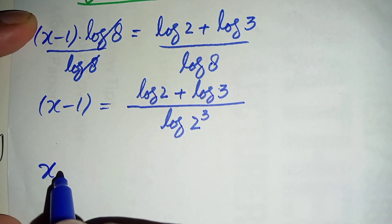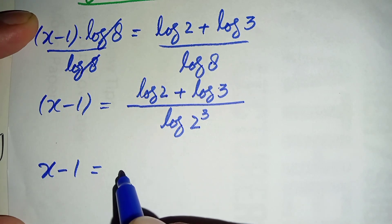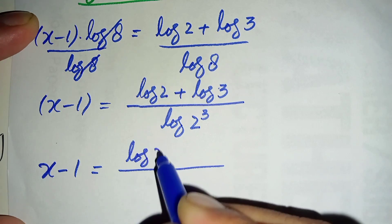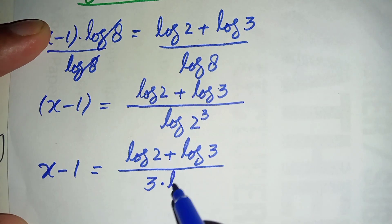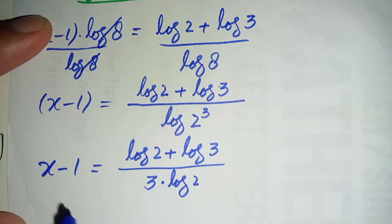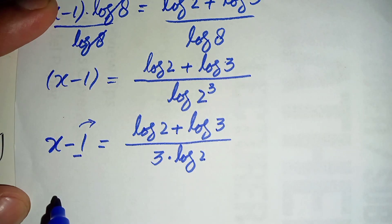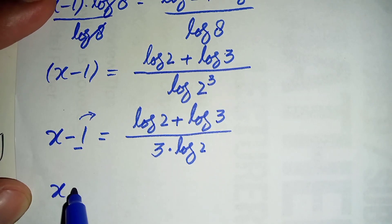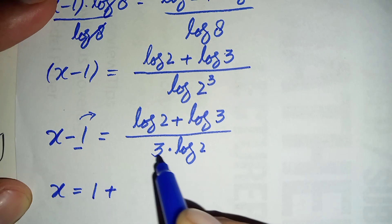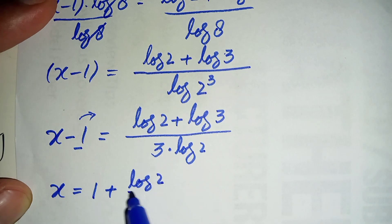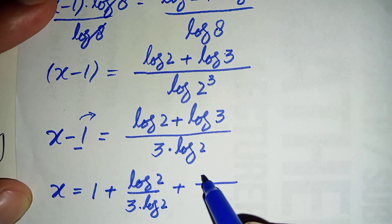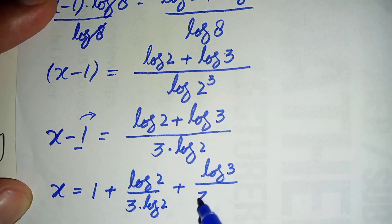So the equation becomes x minus 1 is equal to (log 2 + log 3) divided by 3 times log of 2. Moving the negative 1 to the right hand side gives positive 1. So x equals 1 plus log 2 divided by (3 times log 2) plus log 3 divided by (3 times log 2).